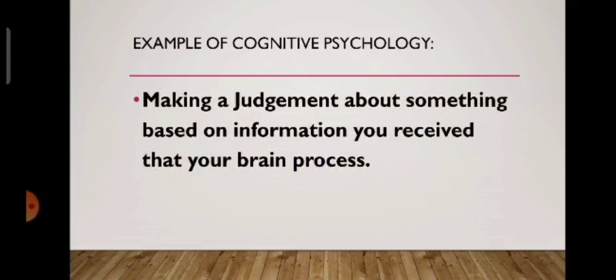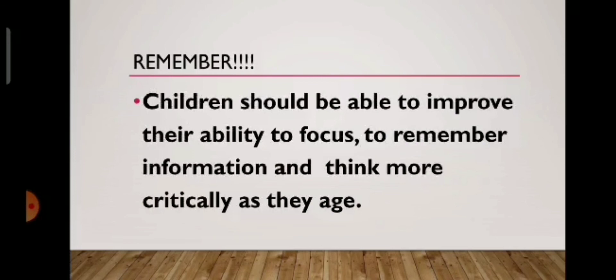An example of cognitive psychology is making a judgment about something based on information you receive that your brain processes. For instance, if someone gives us information about a person we have never met, we may form a judgment about that person based on that received information — that is an example of cognitive psychology. Let us all remember that children should be able to improve their ability to focus, remember information, and think more critically as they age. Thank you.